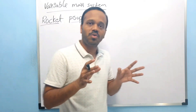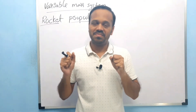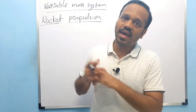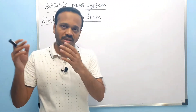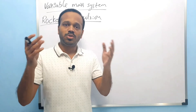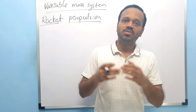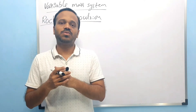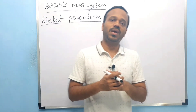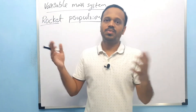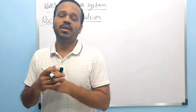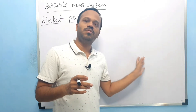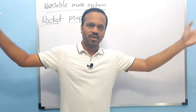So rocket propulsion is a variable mass system. We are going to derive the rocket equation. Without rocket science, we would have no GPS satellites, no climate monitoring satellites, no Earth-surface satellites, no space stations — nothing. We would not be able to land on Mars. This is all because of rocket science.